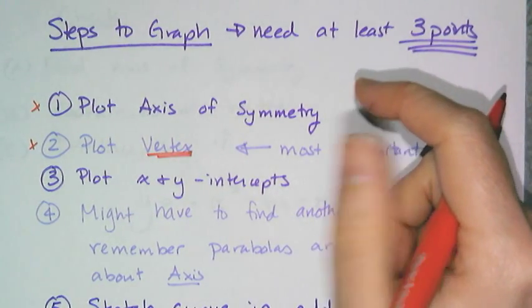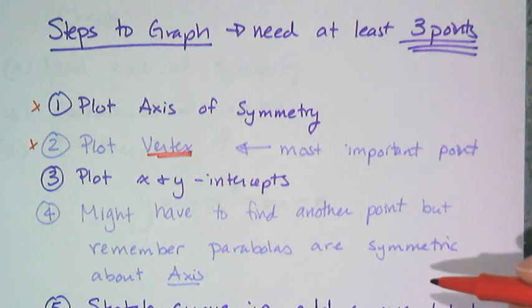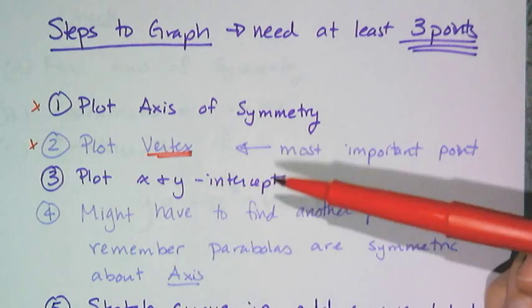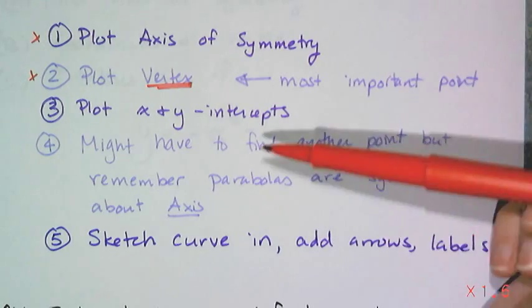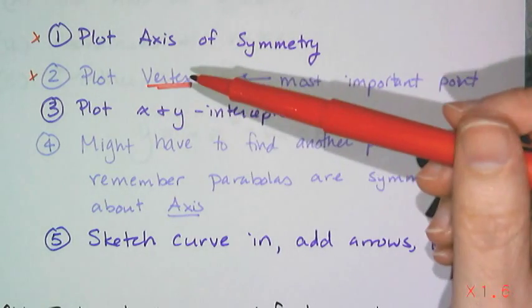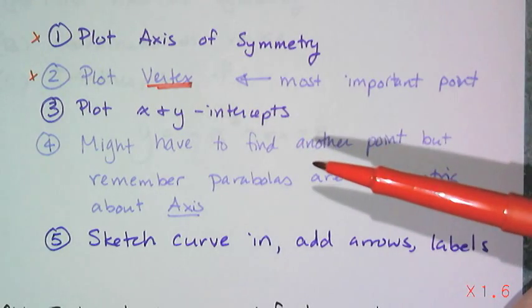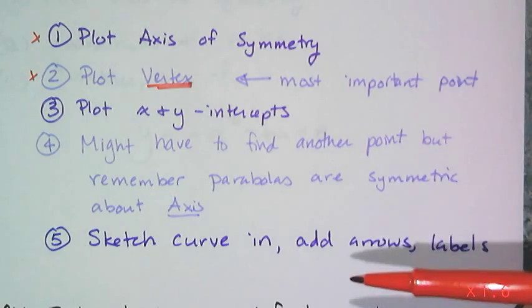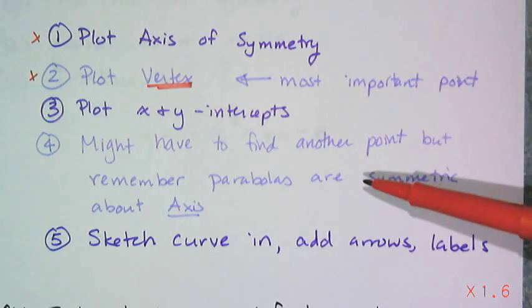Now ideally your other two points would be your x and y intercepts. That would be the best graph of a parabola you could make because x and y intercepts are also usually important to the function or an application. And sometimes the x intercepts, the y intercepts, and the vertex are all exactly the same point, like in the case of y equals 2x squared or something. And in those cases you're going to have to find another point.